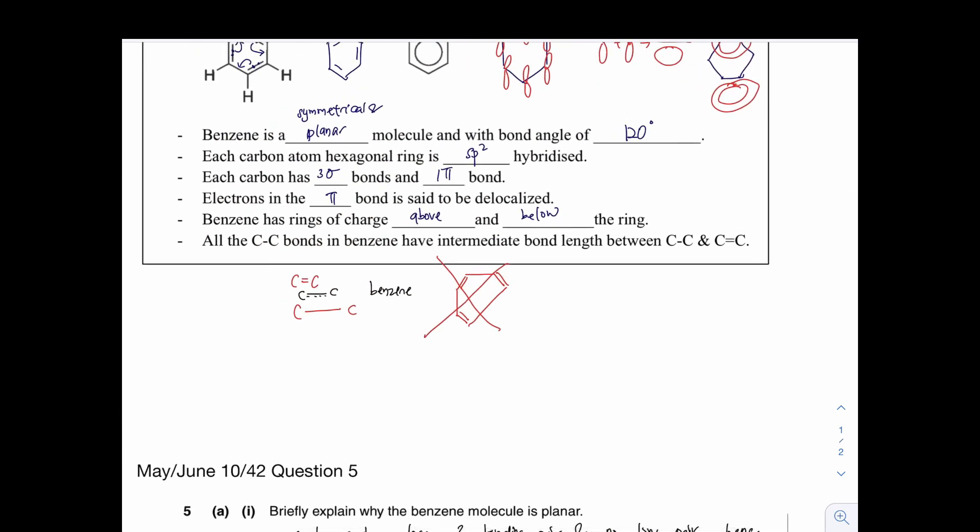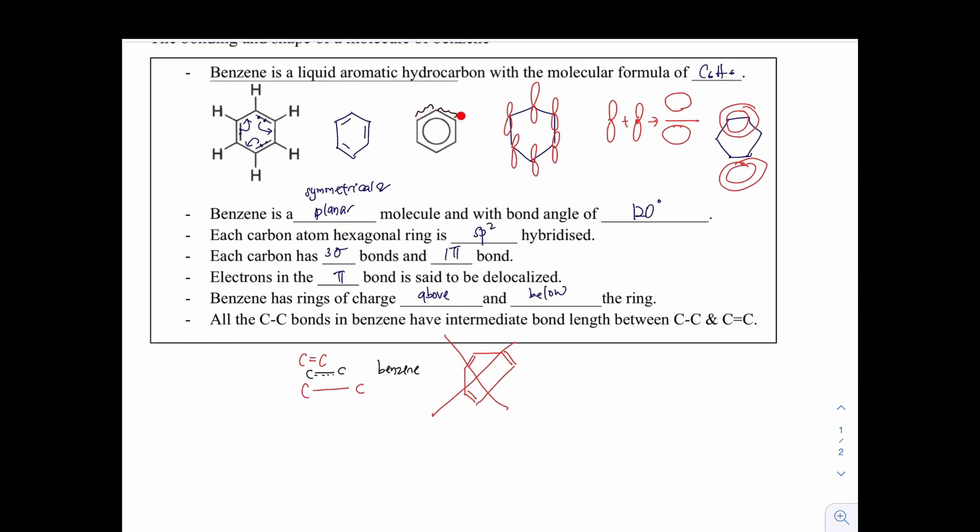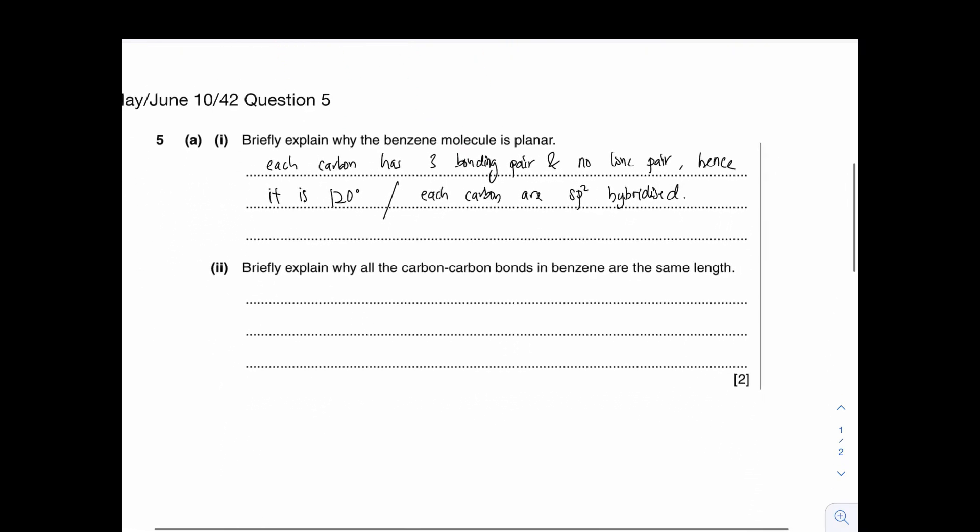I've mentioned to you that all the C-C bonds in the benzene have intermediate bond length between the C single bond and the C double bond. The reason why all of them are having the same bond length is that the pi-bond electrons are constantly moving around. And because of that, the electrons are evenly distributed. Hence, you can see that the C-C bond in the benzene is very specific, unlike the usual double bond and the single bond. So over here, you can write it down like this. You can mention that the pi-electrons are delocalized. Or you can mention that the electrons are evenly distributed.